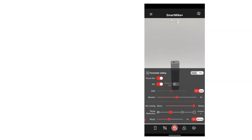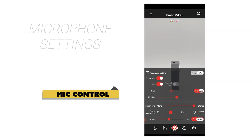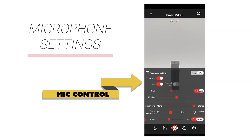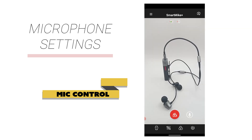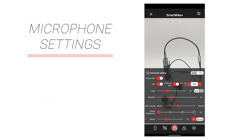Near the top, there is a switch for three mics including the built-in microphone of Smart Mic Plus, the microphone of your mobile phone, and the external microphone. When you insert another microphone or a headset with a microphone into the 3.5 millimeter jack of the Smart Mic Plus, the switch of the external microphone will be activated.